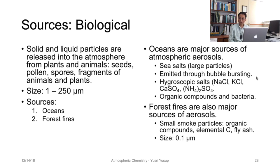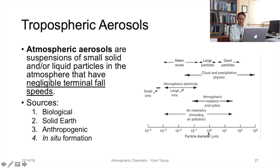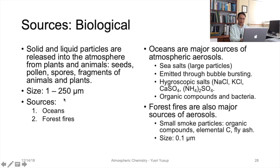Now we discuss the individual four sources. The first is biological sources: solid and liquid particles are released into the atmosphere from plants and animals in the form of seeds, pollen, spores, and fragments of animals and plants. The particle size range from biological sources is 1 to 250 micrometers. Oceans are major sources of these atmospheric aerosols, releasing particles in the form of sea salts, which are very large particles emitted through the process of bubble bursting.